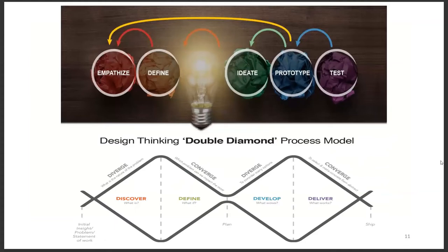The first two stages of design thinking are empathy and define. These two represent the first diamond in the design thinking process. The diamond represents the divergence of ideas to discover a problem, followed by a convergence of ideas on its definition. The last three stages — ideate, prototype, and test — represent the second diamond in the design thinking process. The diamond includes a divergence of ideas for developing a solution, followed by a convergence of ideas for delivering it.